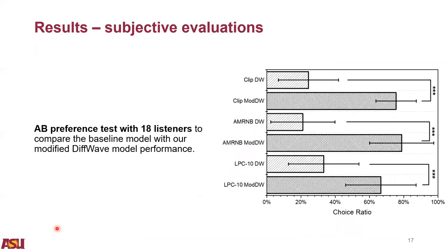We also performed a subjective evaluation on model performance with 18 listeners. We used AB preference tests to compare the baseline model and our modified DiffWave model. For each listening test set, 15 pairs of original and restored speech samples were randomly generated from the TIMIT testing dataset for each experiment. We ensured the same spoken sentence is not used twice in any pair in one listening test set, and the order of samples presented was also randomized. Listeners were instructed to select the sample with better quality without any prior knowledge. The AB preference test results show that our modified DiffWave restored speech has significantly better quality than the baseline model, with a p-value smaller than 0.001 by t-test.